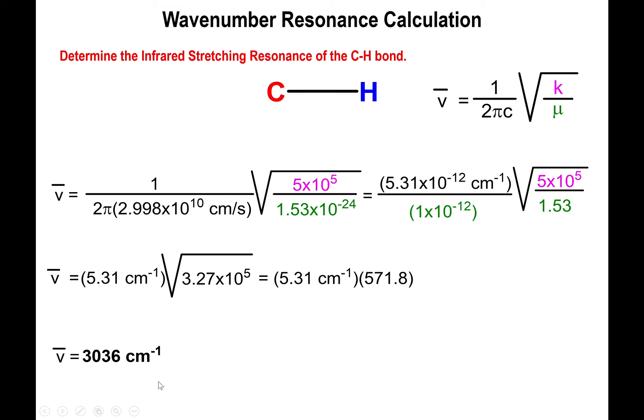This tells us that if we have a carbon-hydrogen bond, we expect it to absorb light roughly in the vicinity of 3000 inverse centimeters.